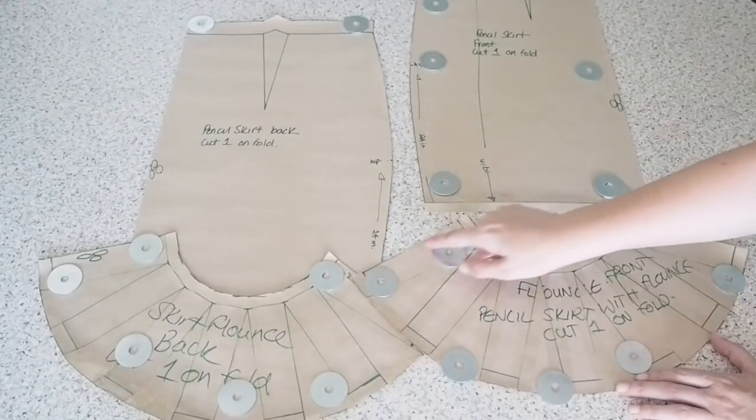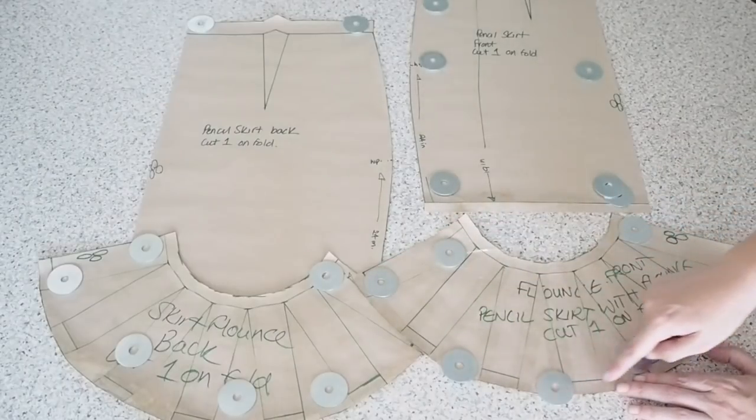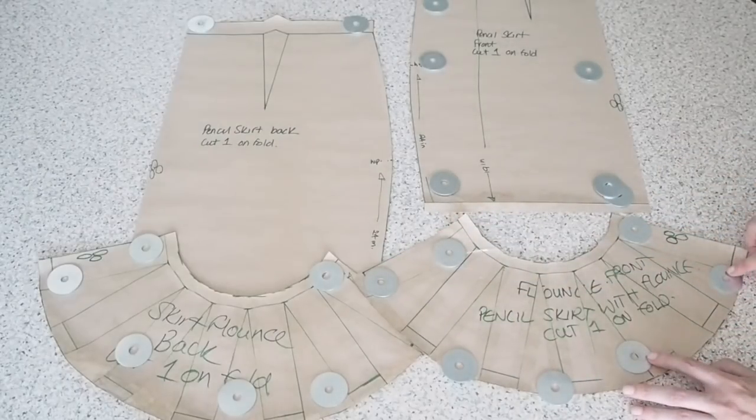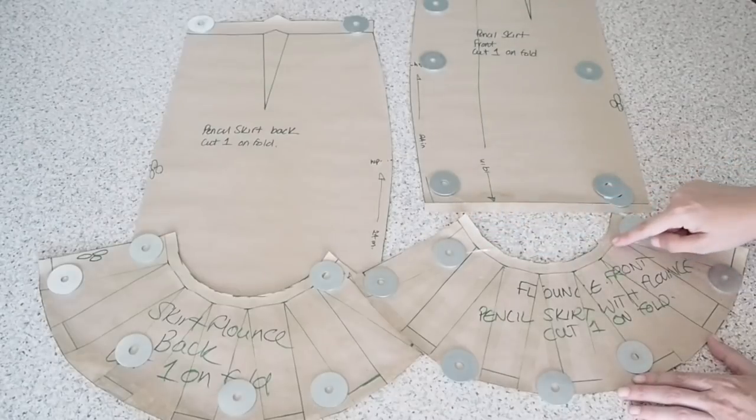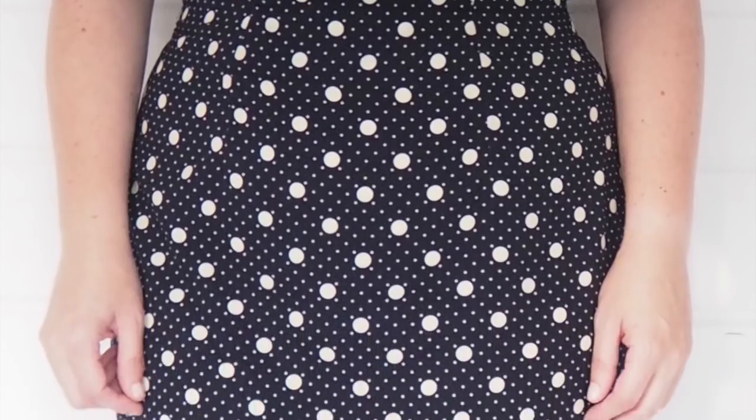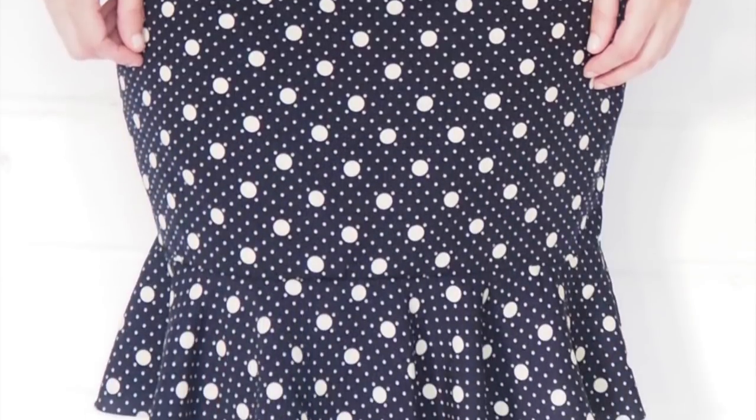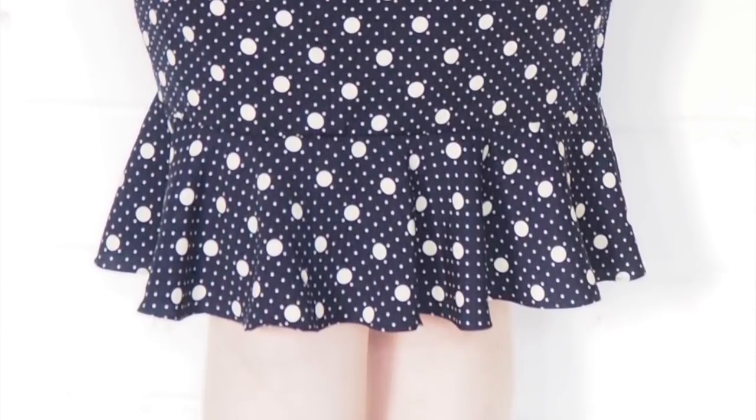Same thing for the front and back, seam allowance the whole way around. Once that pattern is sewn up, this is the result. So with a two inch spread, this is the type of flounce you'll get.